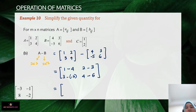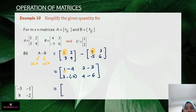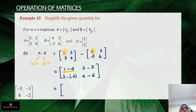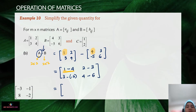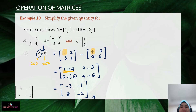We compute: 1 minus 4, 2 minus 3, 3 minus negative 5, and 4 minus 6. I'll highlight the partners — for example, the element in position one-one is paired with the corresponding element from the same position. Remember, for subtraction you cannot change the order: it must be A minus B, not B minus A. The final answer is the matrix with elements negative 3, negative 1, 8, negative 2.